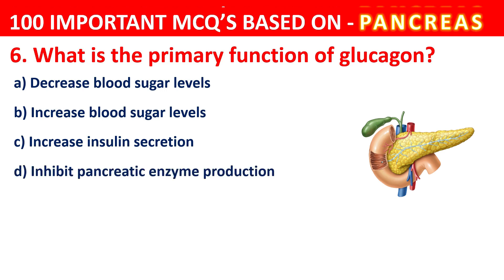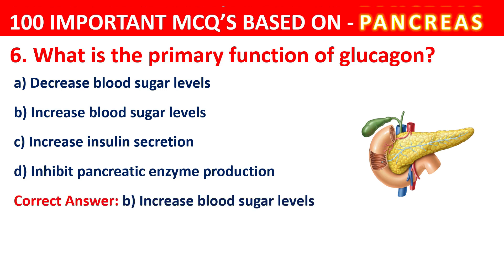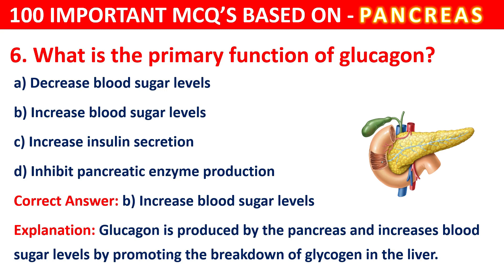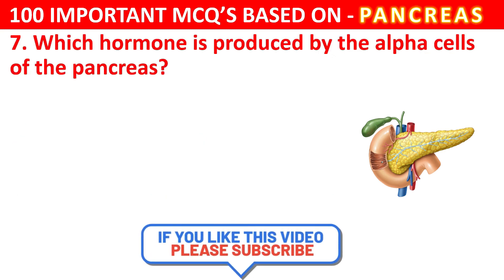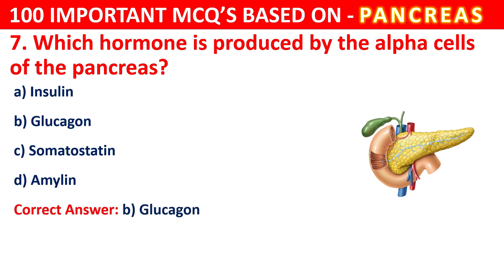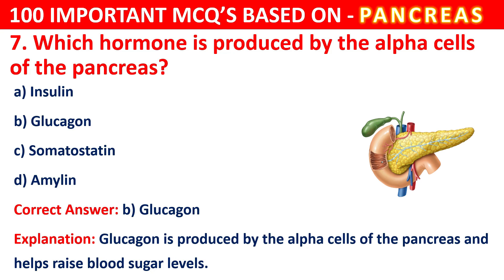Question 6. What is the effect of Glucagon on blood sugar levels? The correct answer is B, that is increased blood sugar levels. Glucagon produced by the pancreas increases blood sugar levels by promoting the breakdown of glycogen in the liver. Glucagon is produced by the alpha cells of the pancreas and helps raise blood sugar levels. Question 7: Which hormone is produced by the alpha cells of the pancreas? The answer is Glucagon.